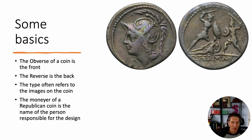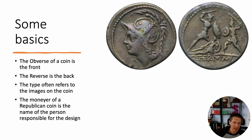When you see a catalog refer to the coin type, that basically is a reference to the images of the coin. On this coin, one type is Roma. The other type is a fighting scene — two warriors fighting with a fallen soldier on the ground.